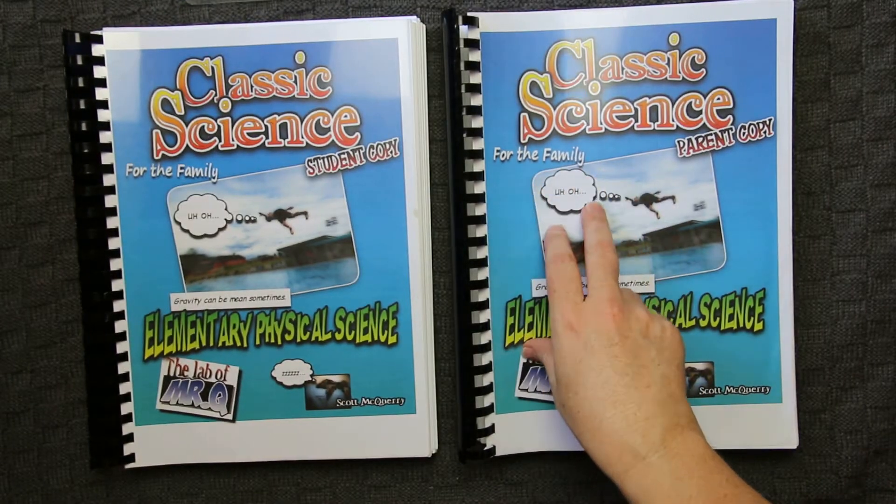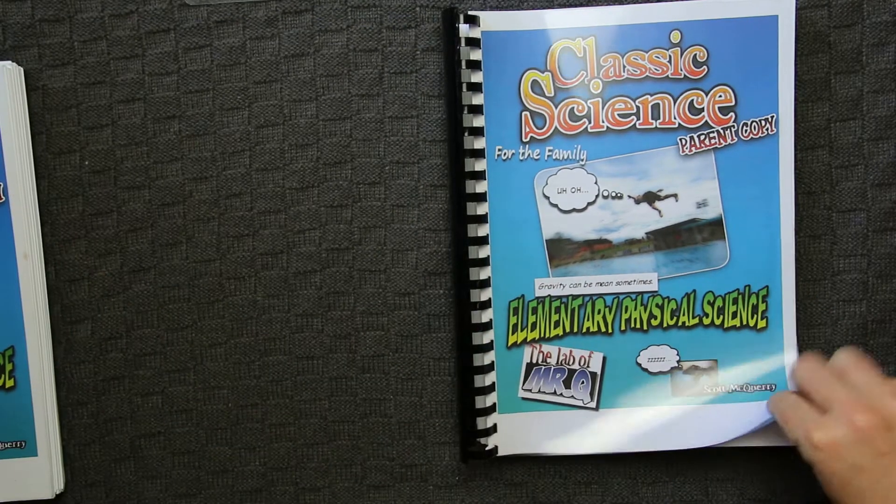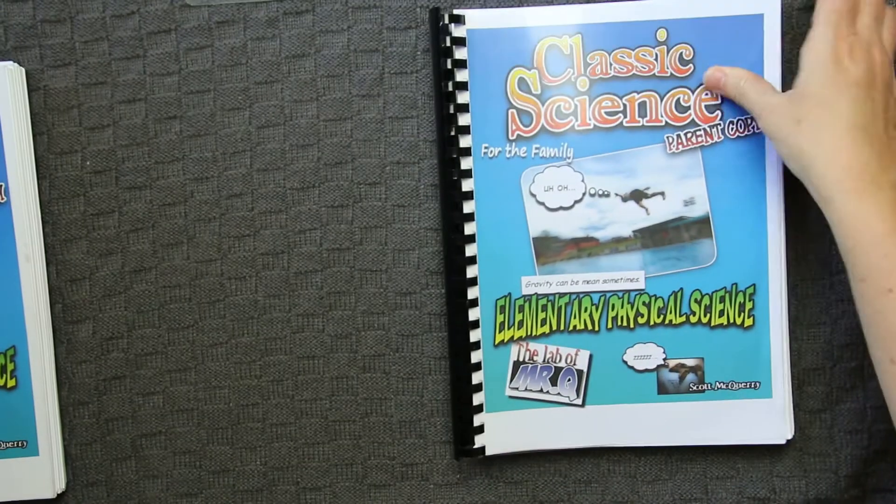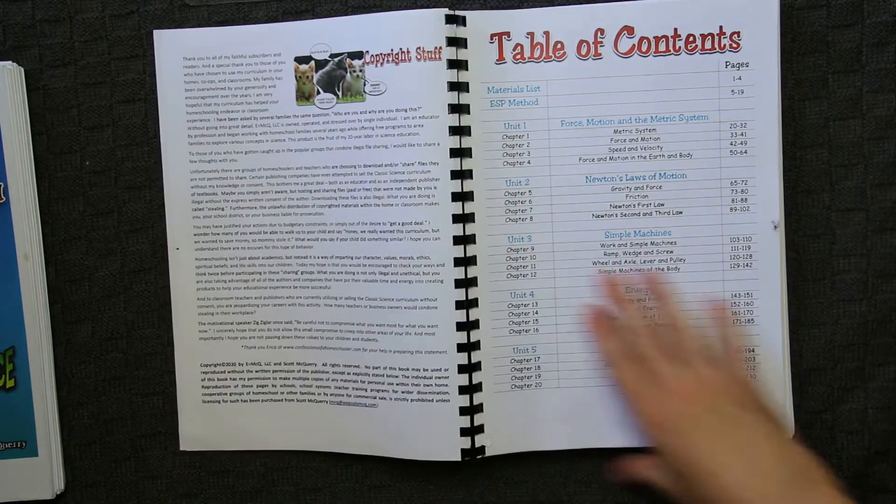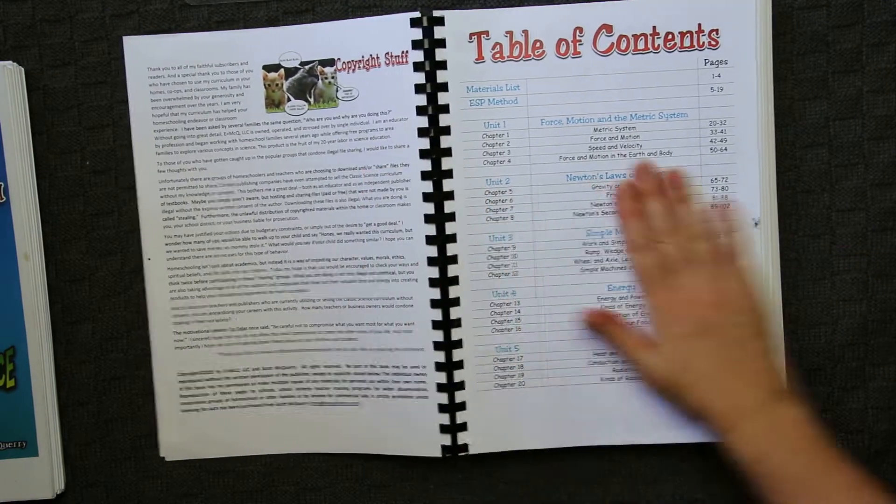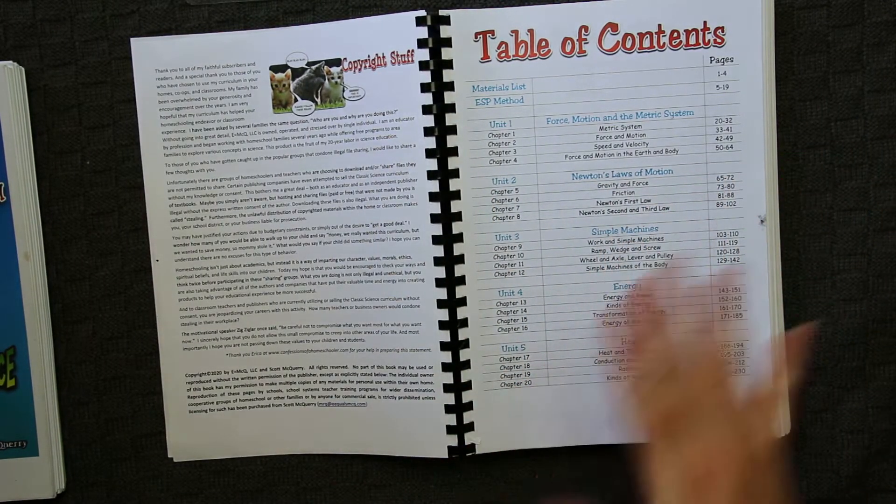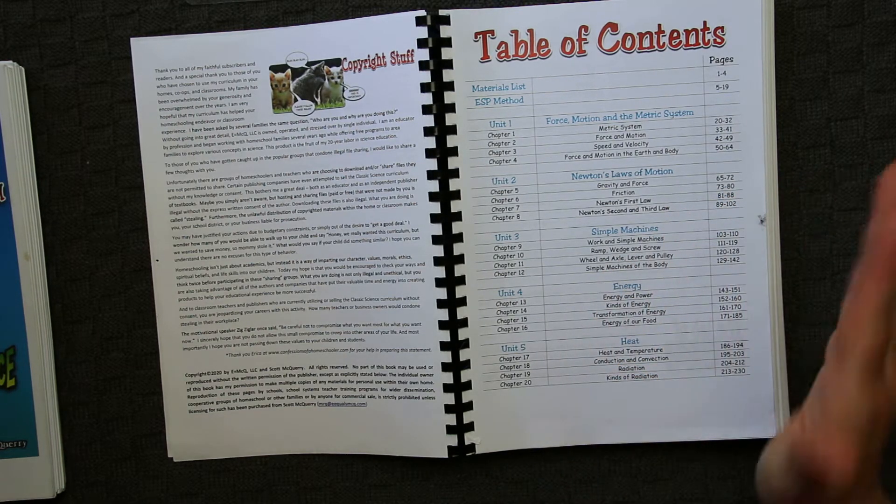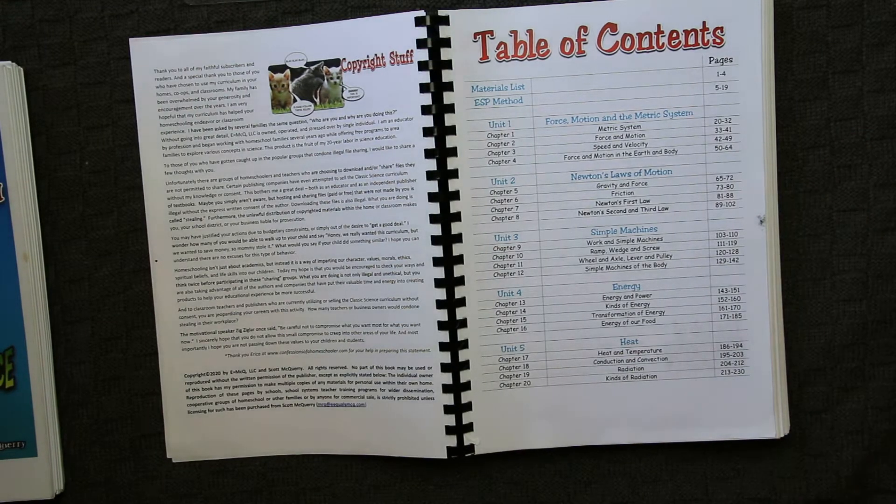So I'm just going to run you through these quickly, give you some of my pros and cons for them. If you've been around here for any length of time, you know that we used the chemistry level of this last year and we're doing the physical science this year. So let's start with the parent copy first. As you can see, fully printed, it's relatively thick. So there are a lot of pages if you do choose to print. We go through first and have a look at the table of contents.